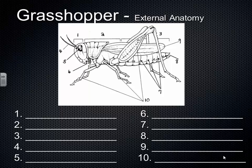We've talked about the various phyla of invertebrates and went through all of them. Today we're going to talk more specifically about insects. We're in the arthropod phyla, Class Insecta. As we said, 75% of all animals are in this one class — insects has the widest diversity of any group. 95% of all animals are invertebrates, and 75% of those are insects. So we're going to talk about some general characteristics; most of what we cover applies to many insects.